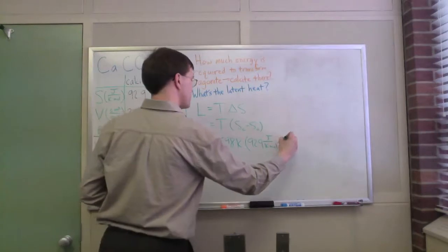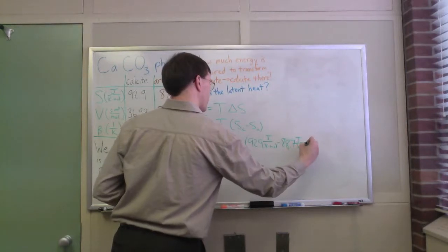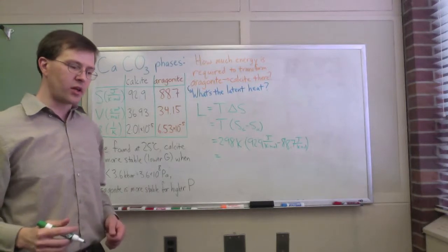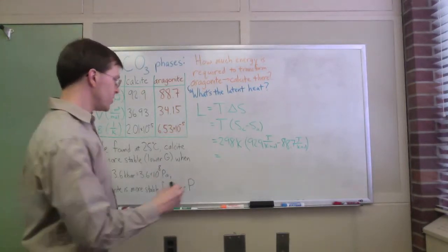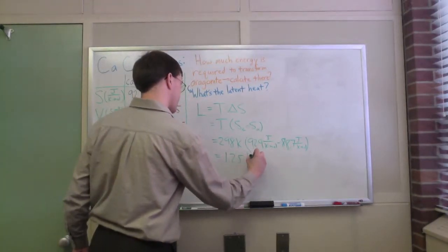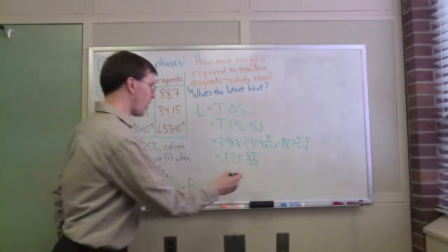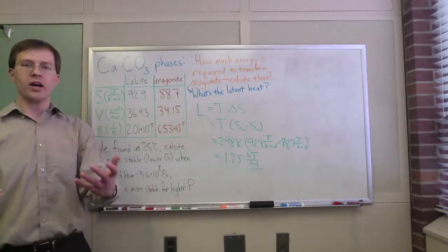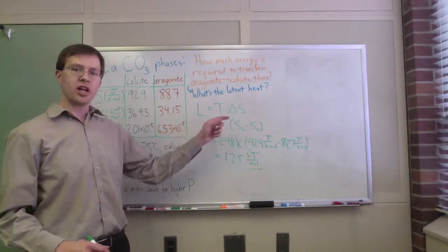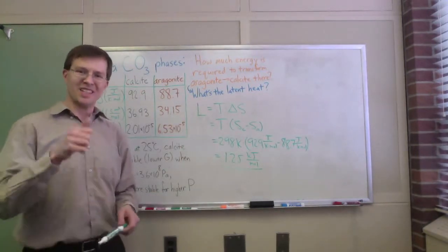minus S aragonite, 88.7 joules per Kelvin per mole. If I put that all together, you can multiply it yourself—you'll get 1.25 kilojoules per mole. The Kelvin cancels out, so we're left with 1.25 kilojoules per mole. If you are the impatient sort, there you go—that's latent heat. Latent heat is telling us basically the cost to change the entropy of your system.